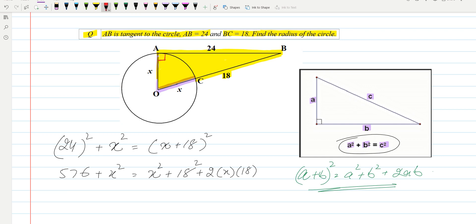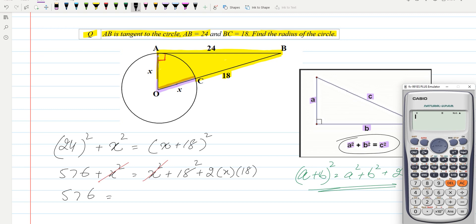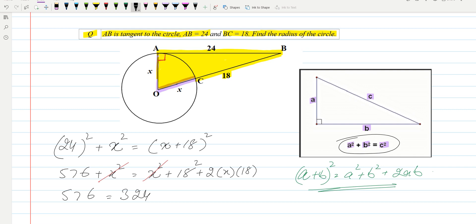We can cancel x² on both sides, and the remaining equation will be 576 equals 18², which is 324, plus 2 times 18 is 36, so we can write 36x.